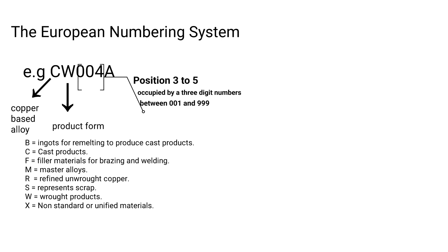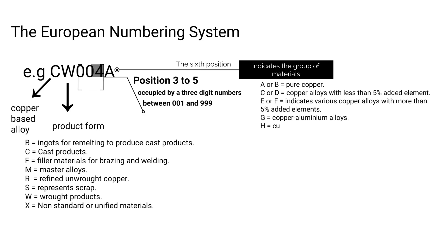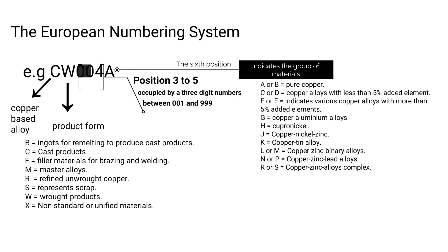Positions three to five are occupied by a three-digit number between 001 and 999. The sixth position is occupied by a letter indicating the group of materials: A or B represents pure copper; C or D means copper alloys with less than 5% added element; E or F indicates various copper alloys with more than 5% added element; G represents copper-aluminium alloys; H represents copper-nickel alloys (cupronickel); J indicates copper-nickel-zinc alloys; K is a copper-tin alloy; L or M represent copper-zinc binary alloys; N or P indicates copper-zinc lead alloys; R or S is copper-zinc complex alloys.